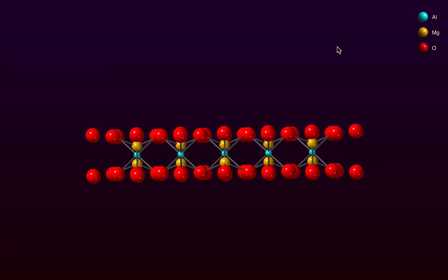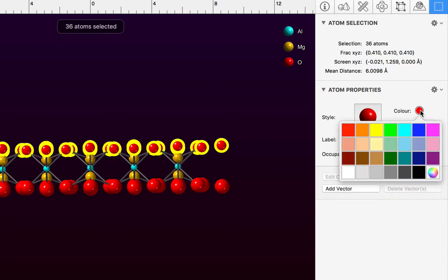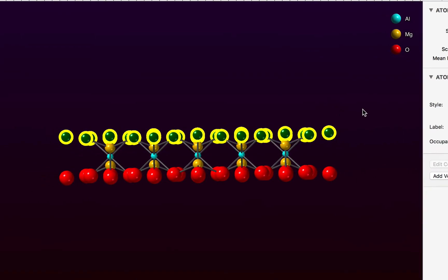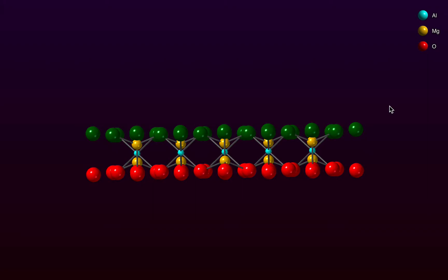Now I would like to differentiate the two layers of oxygen so I'm going to use the arrow tool again and select the upper layer of oxygen. I'm going to use the selection inspector to change the colours of those selected oxygen atoms. I'll make them green to differentiate them from the lower layer.